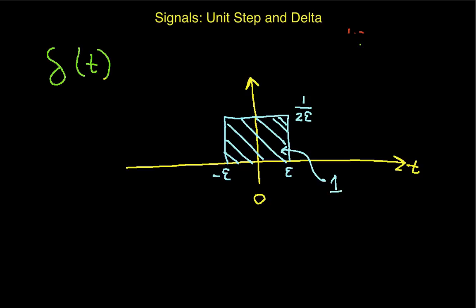Now, let's suppose I choose a different value of epsilon. Let's call this epsilon prime. Now, this is 1 over 2 epsilon prime. So, you can see this is taller and narrower. The area of this thing is still 1. Now, suppose I keep doing this. I keep choosing smaller values of epsilon. My rectangle keeps getting narrower and taller. But the area, the way I'm constructing this, the area stays 1.